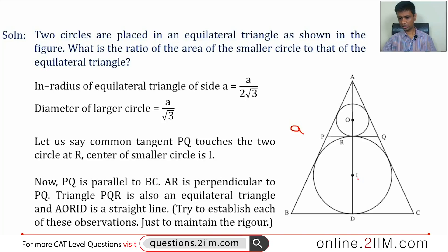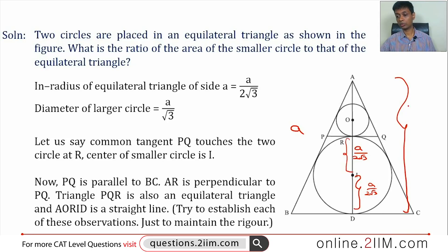There's a circle inside — this is the incircle, so its radius will be a/(2√3), and its diameter is a/√3. The full distance AD is the altitude, which is (√3/2)a. Now we need to find the radius of the smaller circle. If you join PQ at the point of tangency — a common tangent to both circles — PQ will be parallel to BC. Calling this tangency point R, the line A-O-R-I-D is straight.